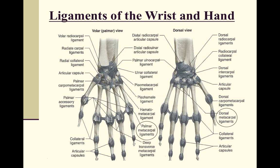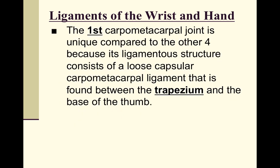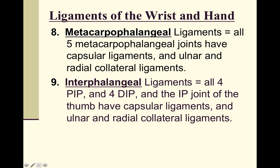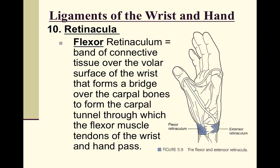The first carpometacarpal joint is special because it is a saddle joint, formed between the trapezium and the base of the first metacarpal at the thumb. The metacarpophalangeal and interphalangeal joints each have capsular and collateral ligaments. While precise naming of each ligament is not required at this level, hand therapists must know all these specific structures.